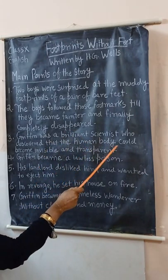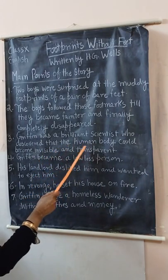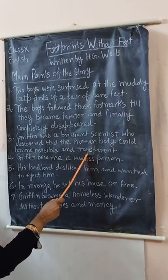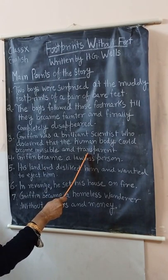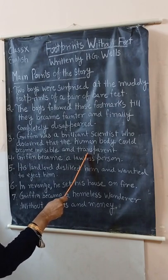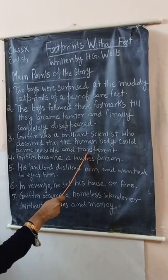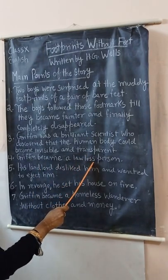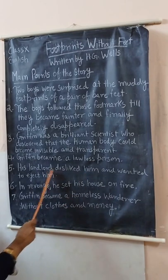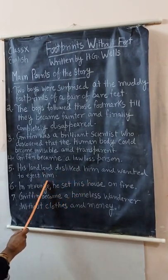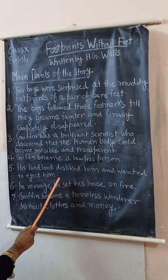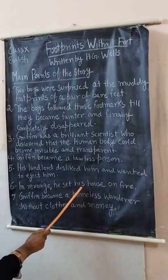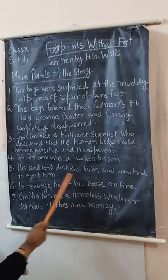Griffin was a brilliant scientist who discovered that the human body could become invisible and transparent. The mystery of the footmarks was quite simple — the boys were following a scientist who had just discovered how to make the human body transparent. Griffin became a lawless person. His landlord disliked him and wanted to eject him, meaning to throw him out of his house.